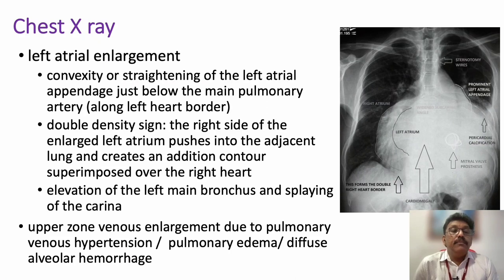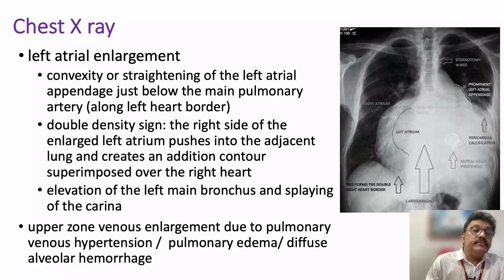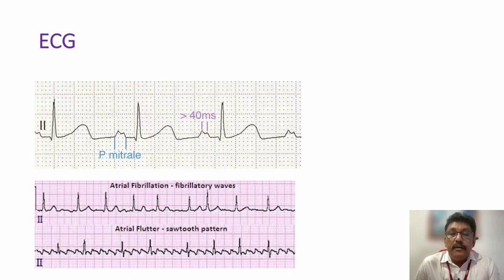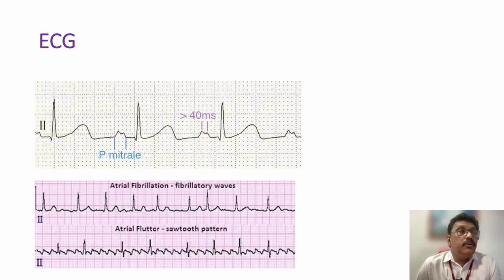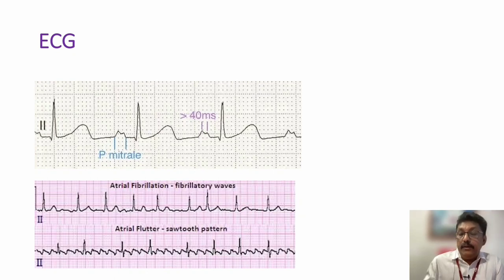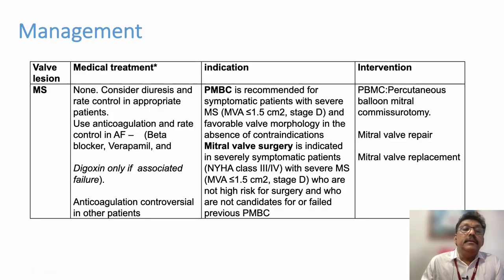On X-ray, an important finding is pulmonary plethora. The left atrial shadow can be seen — sometimes a double density sign — where the right side of the enlarged left atrium pushes into the adjacent lung creating an additional contour superimposed over the right heart. On ECG, P-mitrale indicates left atrial enlargement — a notched, wide P wave (more than 2.5 small divisions) with an M-shaped appearance. If the patient develops atrial fibrillation, there is an irregularly irregular QRS complex without proper P waves.